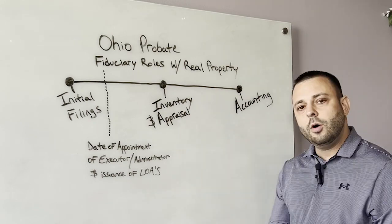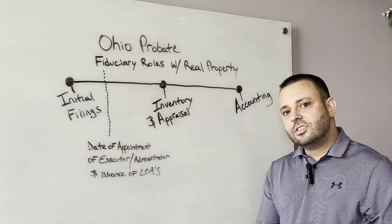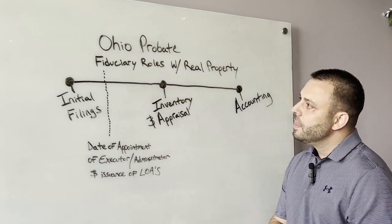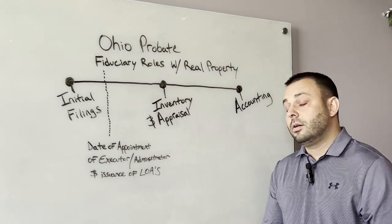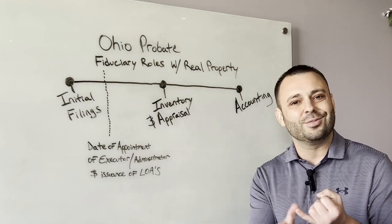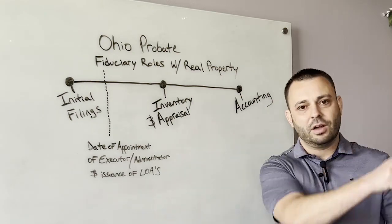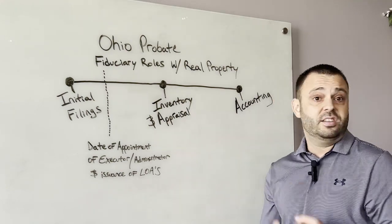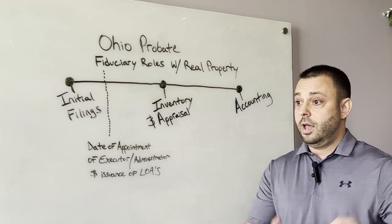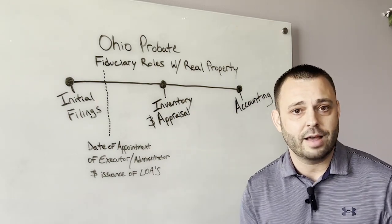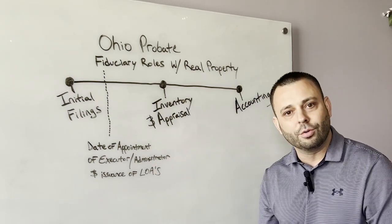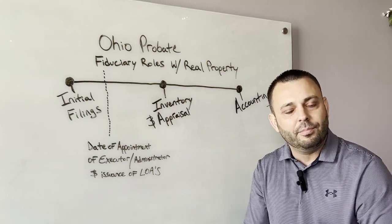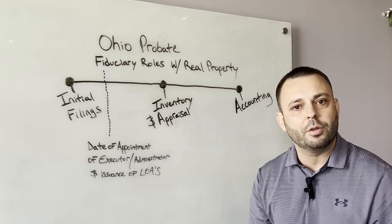Sometimes I have to tell people that the executor has certain key duties related to real property. Specifically, the duties that an executor has that are most common are to pay taxes or assessments — if there are things due to the government or a governmental agency on behalf of real property — and they have a duty to make necessary repairs. This doesn't mean to put a pool in on a house that doesn't have a pool, but this could mean if there's a hole in the roof, getting that hole repaired to protect from water coming in and doing further damage to the property.